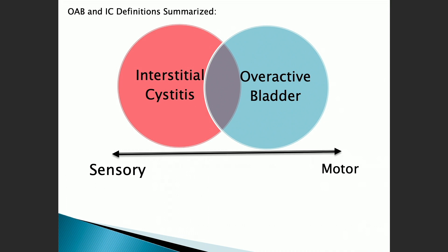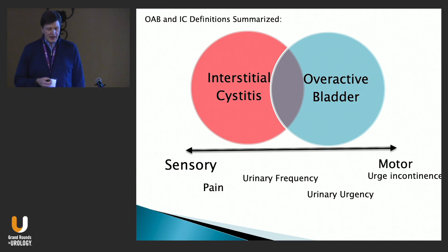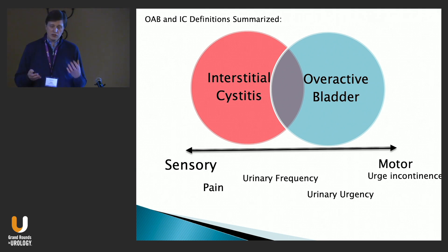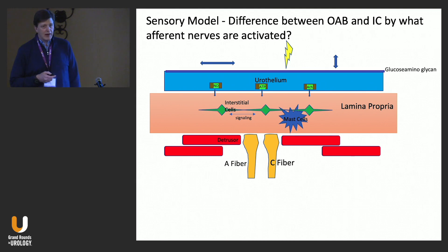Interstitial cystitis tends to be a bit broader in definition criteria. My key differentiator: I think of interstitial cystitis as a sensory condition and overactive bladder as more motor. Bladder pain is a sensory condition — 'there's something in my bladder all the time.' Urinary frequency in IC feels like incomplete emptying, whereas OAB is 'I can't delay urination — I need to get to the toilet.' Urge incontinence is the pure motor response. Hunter's ulcer is high on the sensory side — diagnostic IC. Think sensory versus motor with some overlap.